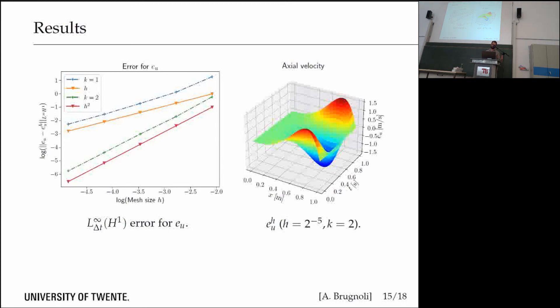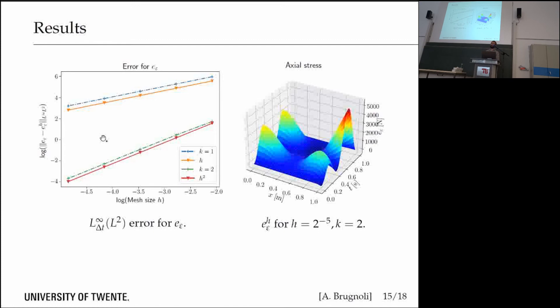Once you implement this, for example in some open source finite element libraries like FEniCS, you can clearly see that for the first variable, the horizontal velocity, we get exactly what we expect: a convergence depending on the degree of polynomials, so convergence H to the power K in the H1 norm. Same story for the axial stress, but in an L2 measure for the error.